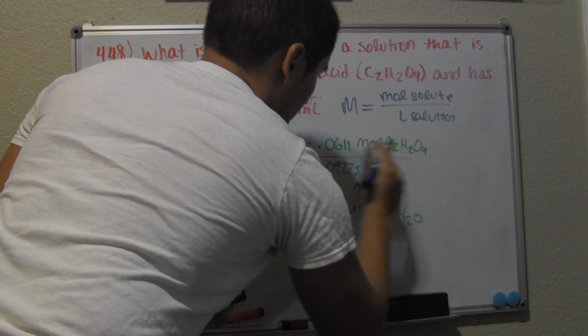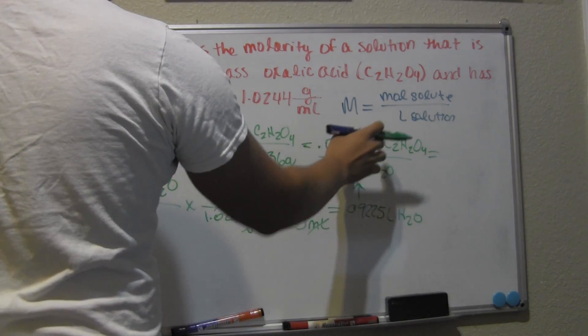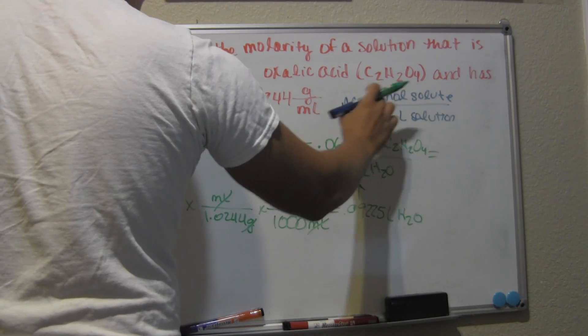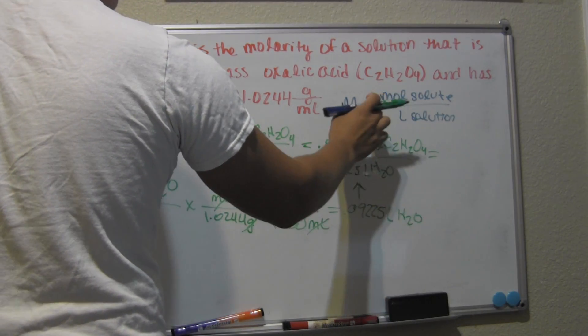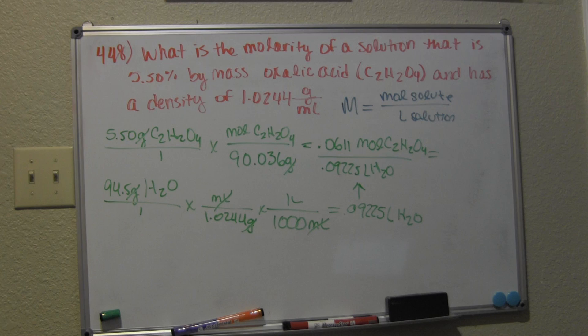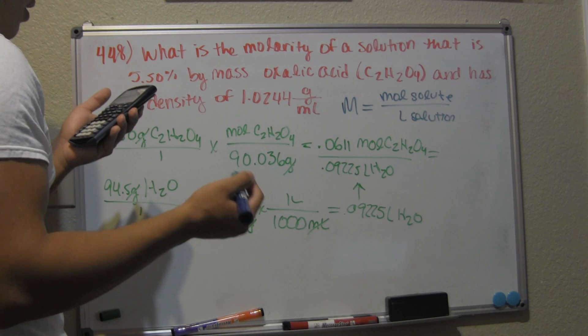We can observe that this looks similar—it is the exact same thing as our molarity equation. So we have 0.0611 divided by 0.009225, and it gives you an answer of 0.662 molars. That's our answer.